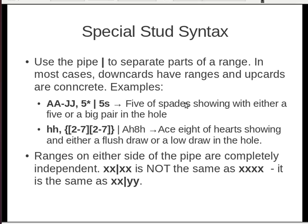One piece of syntactic sugar for stud is the pipe character, which you can use to separate parts of a range. Almost always when working with ranges in stud, you know what the up cards are but not the down cards. So you use the pipe to separate the down cards and the up cards — it saves a lot of typing. The ranges on the left and right-hand side of a pipe are completely separate. For instance, this range is either a five in the hole or a big pair in the hole, and then the five of spades showing.